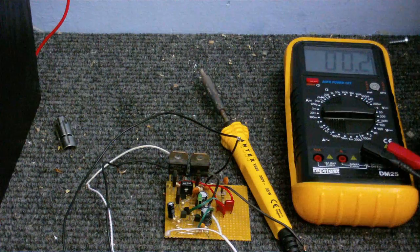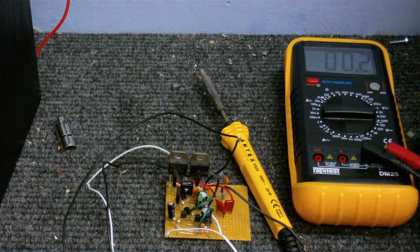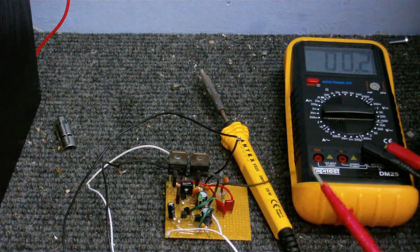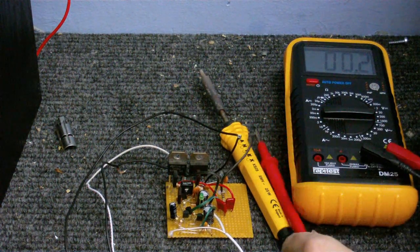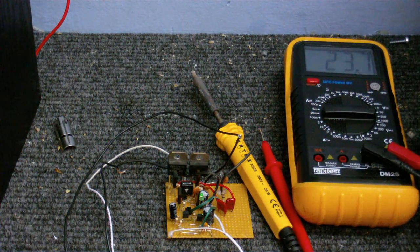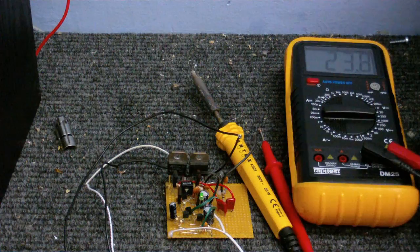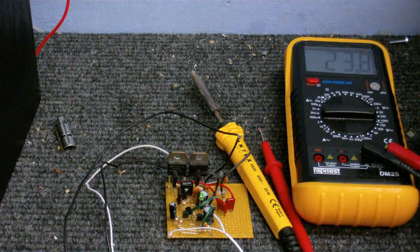Anyway, the problem with this thing is, whenever it's powered up, it just puts the full DC voltage onto the speaker wire. I've got the meter connected to where the speaker would normally be connected. And when I turn the power supply on, as you can see, it gets the full positive DC voltage, minus the voltage drop of the transistors, of course.